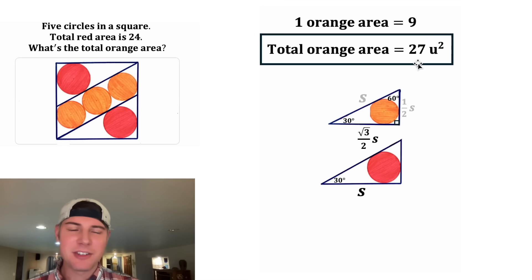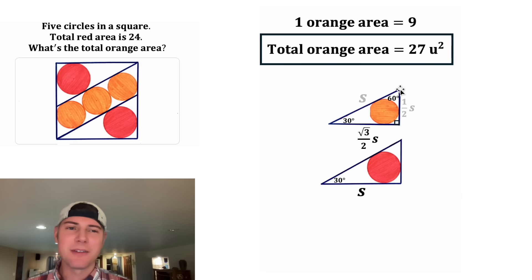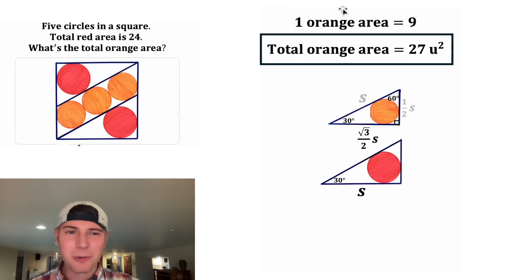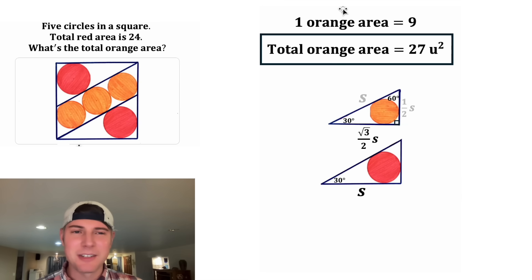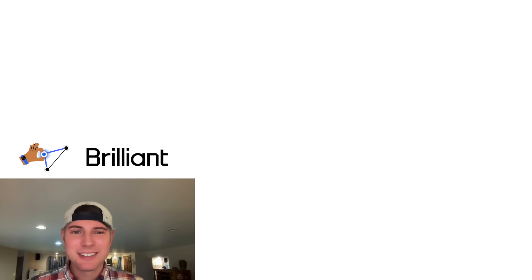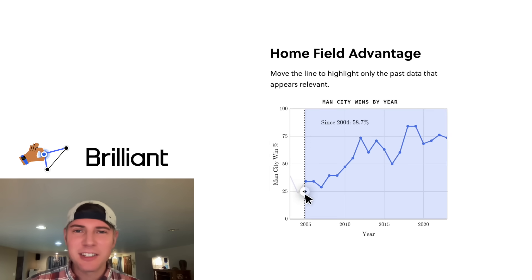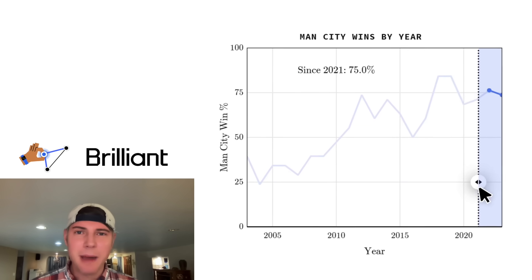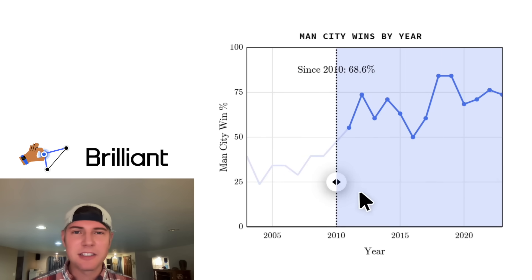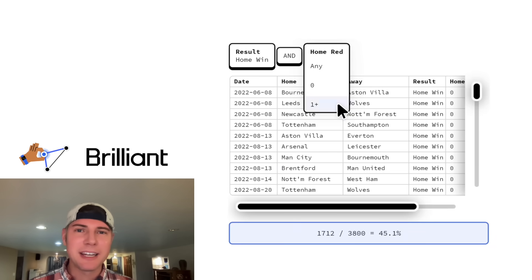The total orange area is going to be 9 times 3, which is 27. Let's give it a label of units squared and put a box around it. This is the answer to our question: the total orange area is 27 units squared. This took a lot more work than I was expecting, but I still think it's a brilliant problem. Speaking of Brilliant, let's talk about Brilliant.